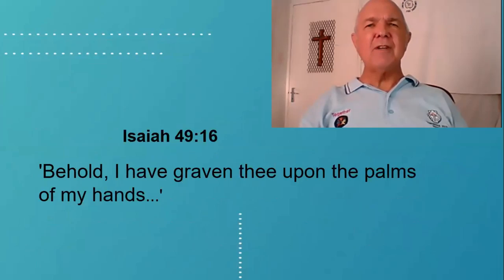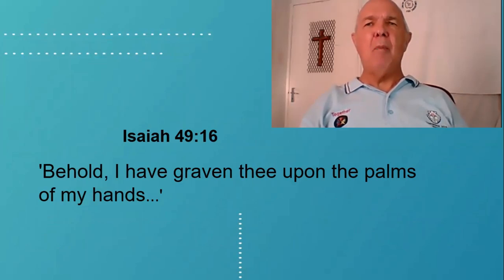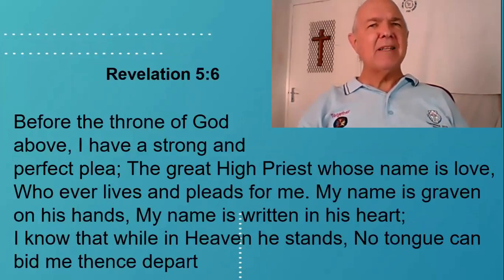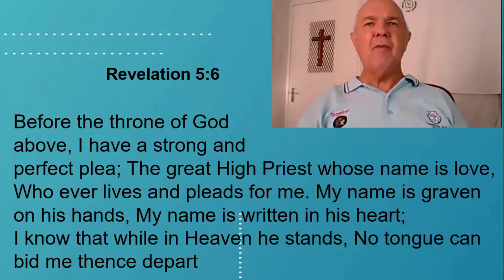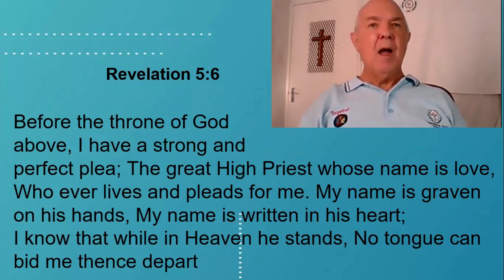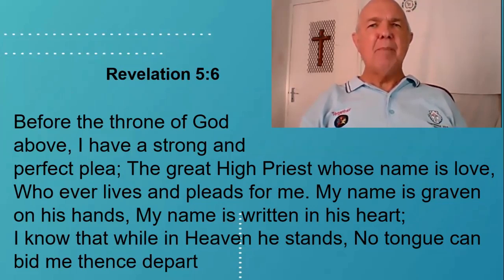In Isaiah chapter 49 verse 16, God said to the nation of Israel, 'Behold, I have graven thee upon the palm of my hands.' This brings to mind our Savior, who has an ever-present reminder of those that are his and what it cost, upon his nail-scarred hands there on the cross of Calvary. We read in Revelation 5 verse 6 — Before the throne of God above, I have a strong and perfect plea. The great high priest whose name is love, whoever lives and pleads for me, my name is graven on his hands. My name is written in his heart. I know that while in heaven he stands, no tongue can bid me thence depart.